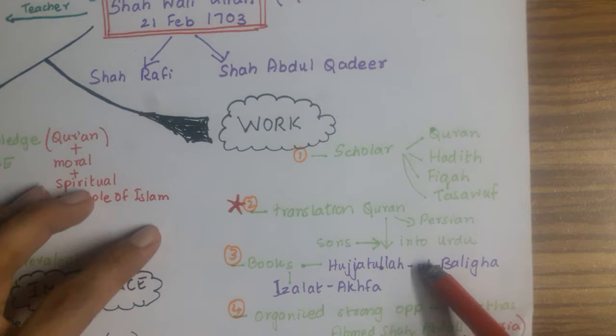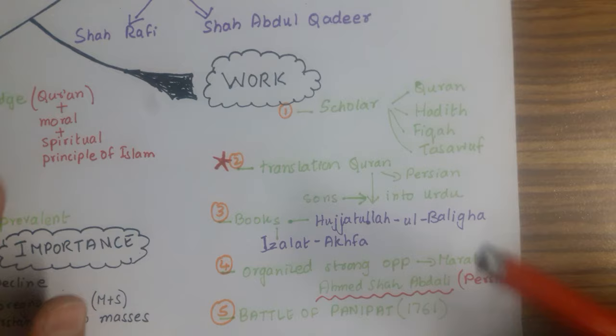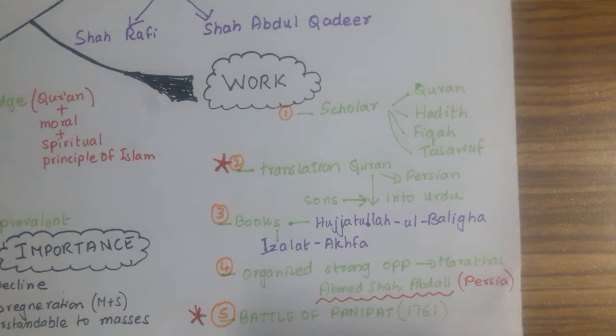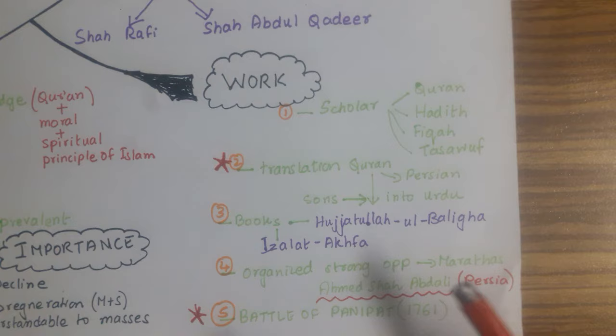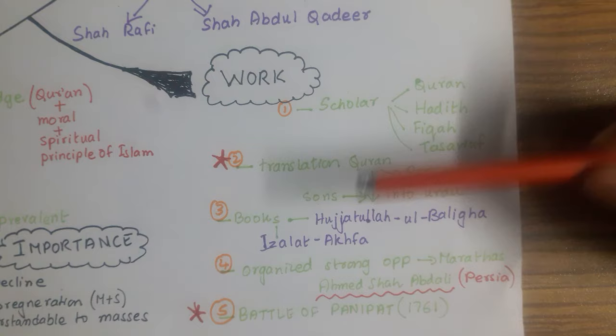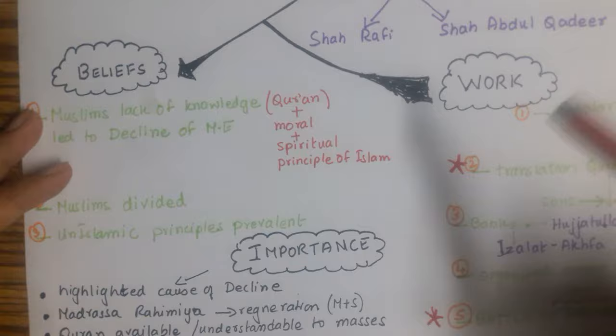He also wrote two important books you need to know by heart: Hujjat al-Baligha and Izalat al-Akhfa. He organized strong opposition against the Marathas, who were trying to invade from the south. He also convinced Ahmad Shah Abdali, a Persian ruler, to come and intervene to unite Muslims against the Marathas. The Battle of Panipat was fought in 1761, and the Muslims were successful, defeating the Marathas.